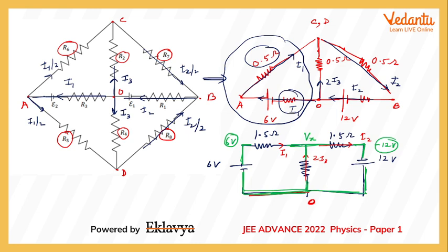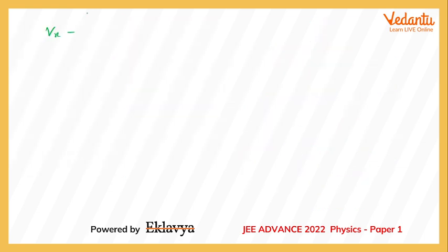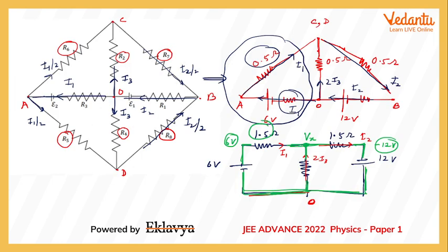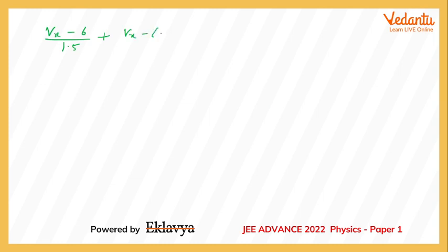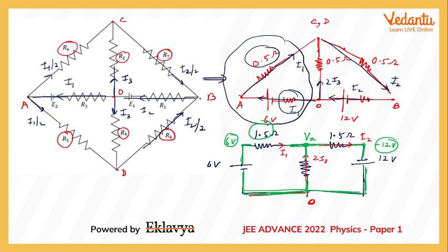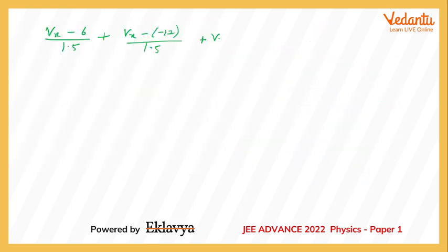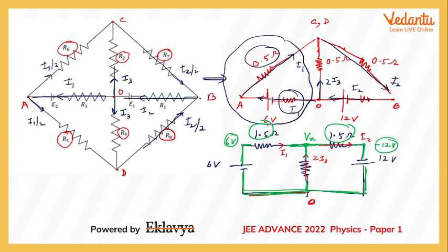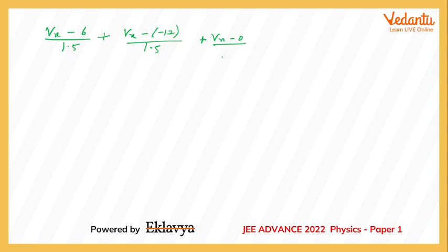Applying KCL at node C/D: the net outward current equals zero. Writing the three branch currents: (Vx − 6)/1.5 + (Vx − (−12))/1.5 + (Vx − 0)/0.5 = 0. Solving this equation with one unknown gives Vx = −1.2 volts.